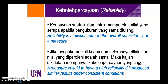So what is actually reliability? Reliability in statistics refers to the overall consistency of a measure. When you distribute an instrument, you have items in your instrument. In reliability, what we need to find is whether the items have internal consistency between one and another. A measure is said to have high reliability if it produces similar results under consistent conditions.